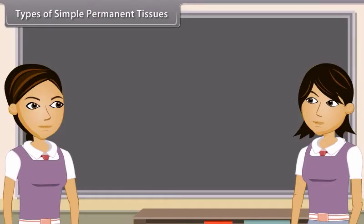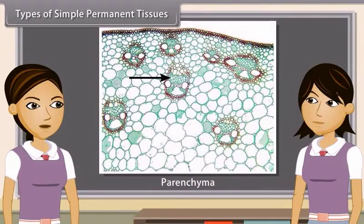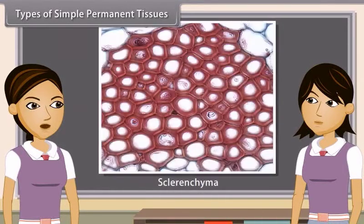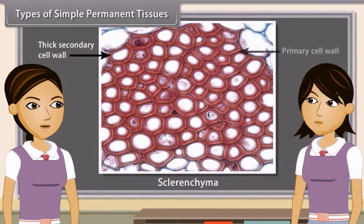On the basis of nature of cells, simple permanent tissues are of three types: parenchyma, colenchyma and sclerenchyma. Parenchyma is made up of cells with thin primary walls that retain their protoplasm. Colenchyma is made up of cells with thick primary walls that retain their protoplasm. Sclerenchyma is made up of cells with lignified secondary walls that have lost their protoplasm at maturity, i.e., are dead.